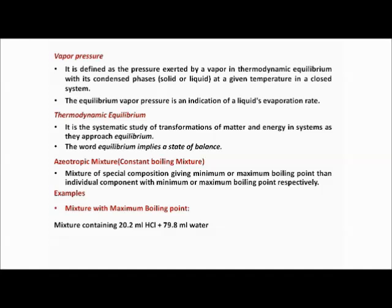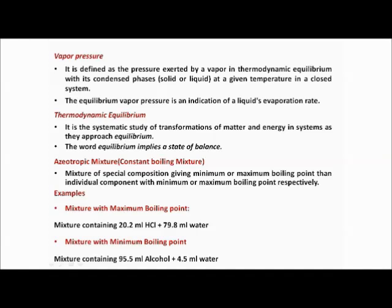For a maximum boiling point azeotrope, we can add 20.2 ml of HCl with 79.8 ml of water — total 100 ml. The boiling point of this mixture is elevated above 100°C. For a minimum boiling point, adding 95.5 ml of alcohol with 4.5 ml of water brings the boiling point down because alcohol is volatile. These are examples of azeotropic or constant boiling mixtures.